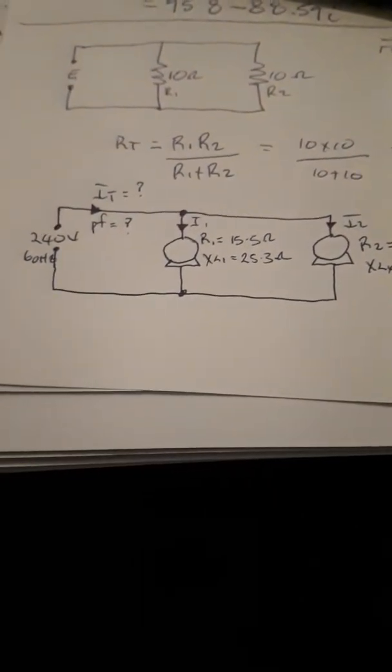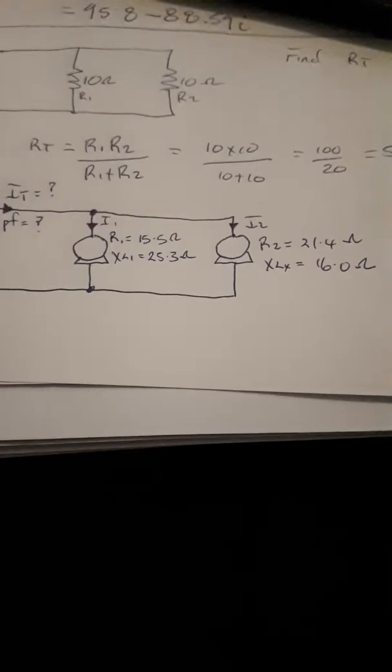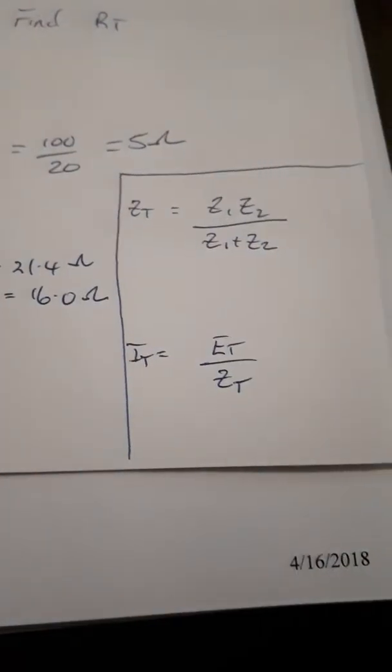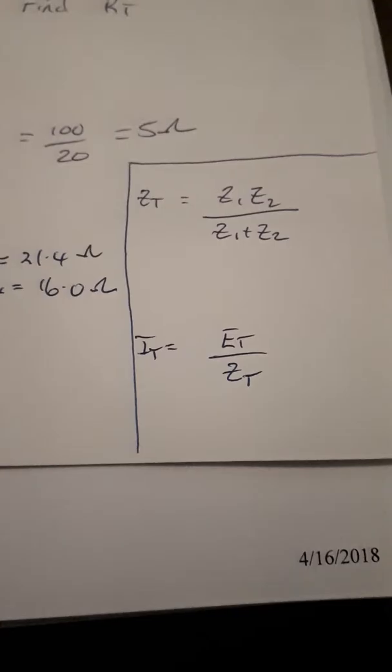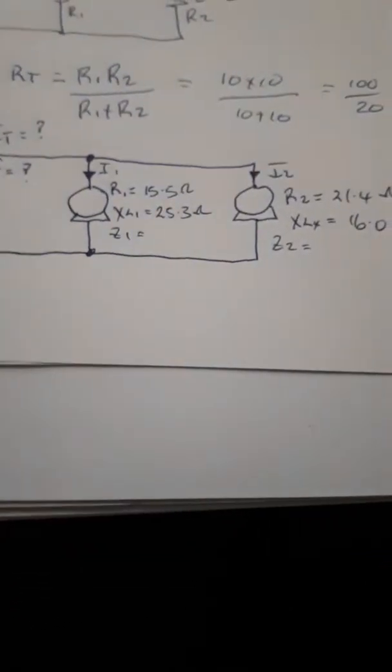Doing so many different calculations, so with this calculator we can set up these two motors here in a formula like this using the product-over-sum rule that we just introduced with the resistors here.